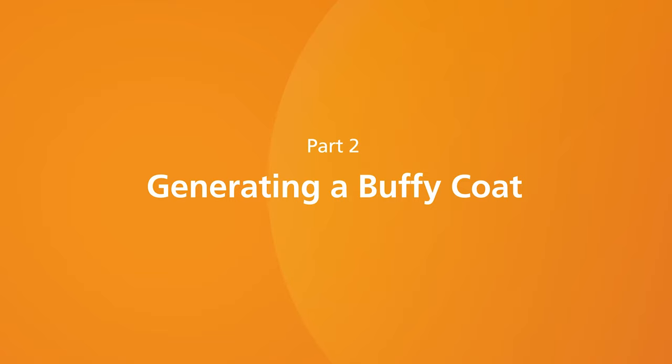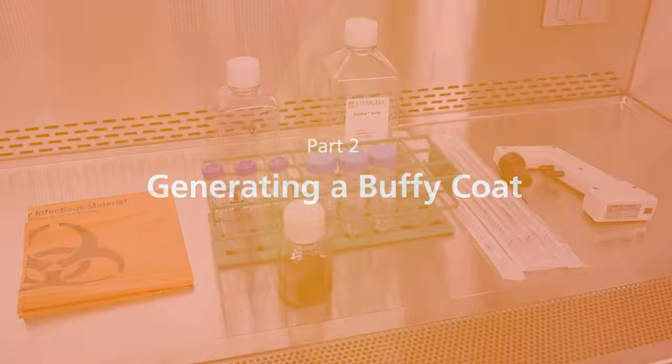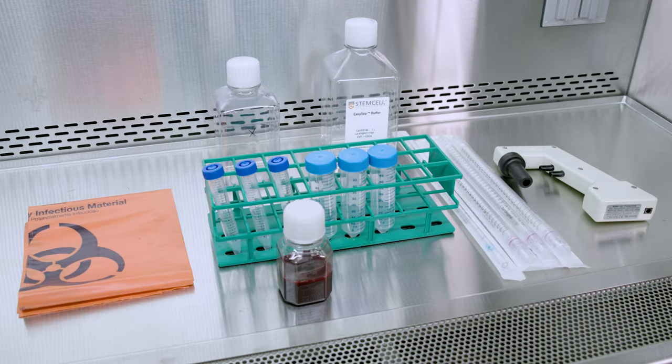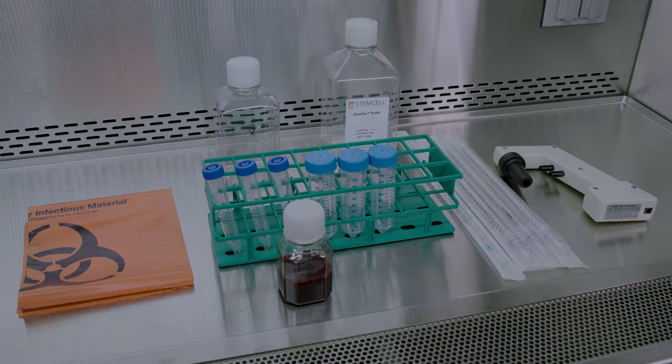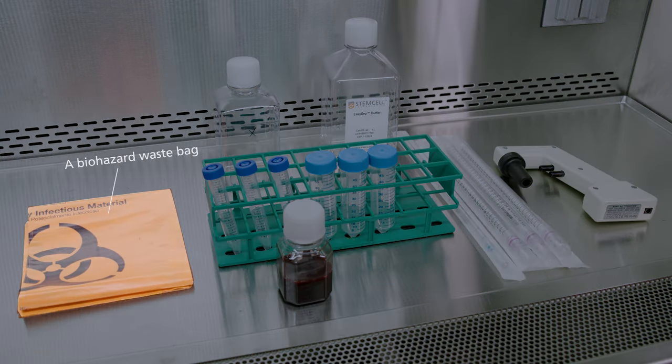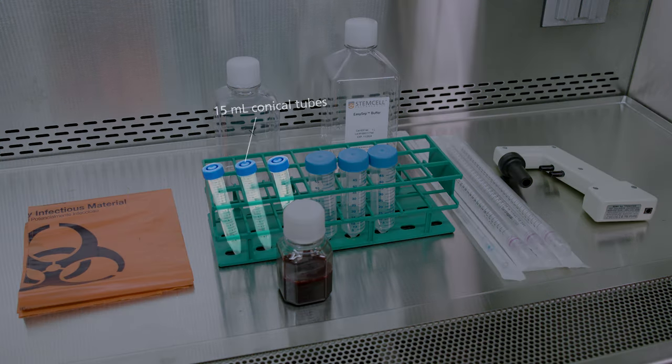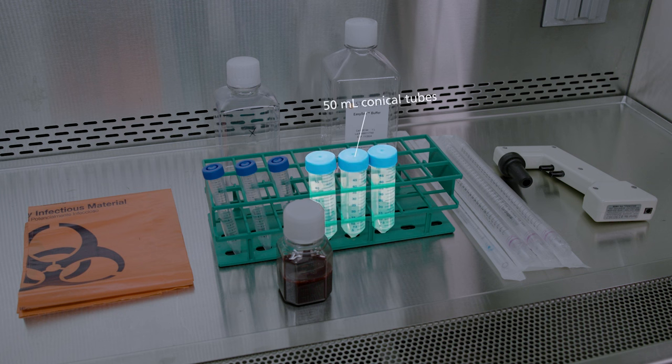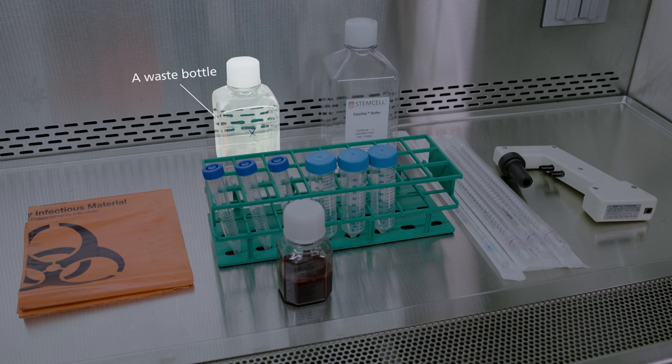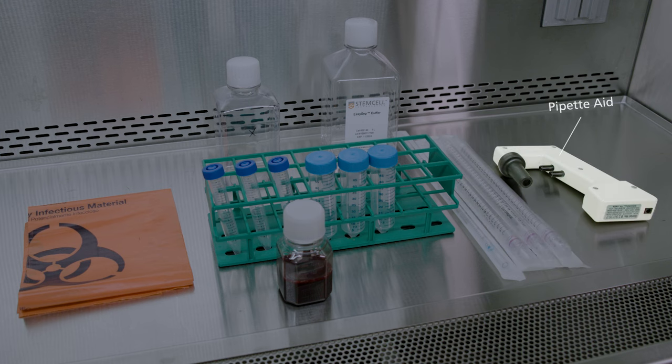Part 2. Generating a Buffy Coat. To generate a Buffy Coat from whole blood, you will need the following items: a biohazard waste bag, 15 mL conical tubes, 50 mL conical tubes, your whole blood sample, a waste bottle, buffer, 5 mL serological pipette, 25 mL serological pipette, and pipette aid.